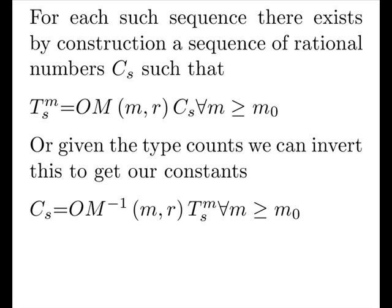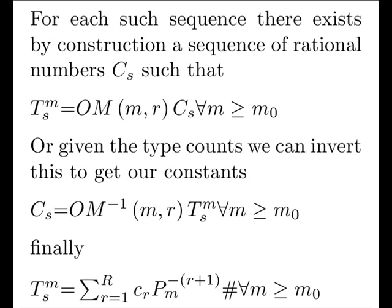Or, given the type counts, we can invert this to get our constants. That is, OM inverse times how many we counted gives us our constants back, as long as we do our counting greater than our start condition. Finally, once we have our counts, or once we have our constants, then we can put it through our primordial matrix, and we get a simple algebraic form, and it tells us our counts forevermore.